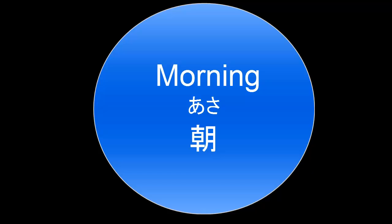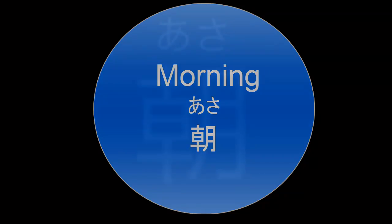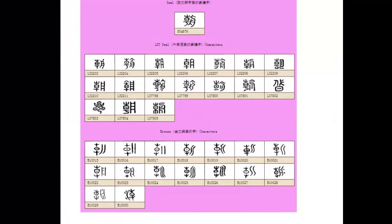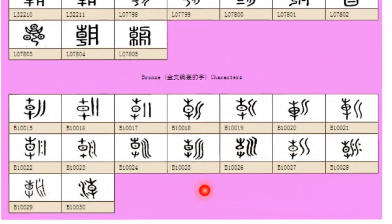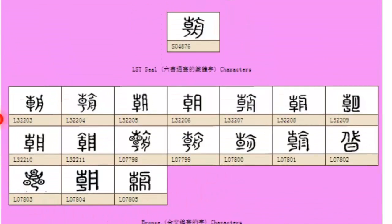This is the kanji which means morning and it's pronounced asa. This chart shows the development of this kanji from the more ancient forms, these here, to forms from about 2,000 years ago, and finally this is our seal kanji,